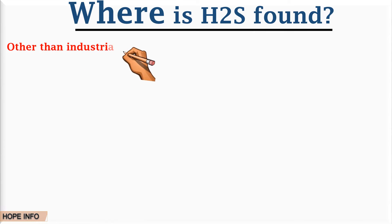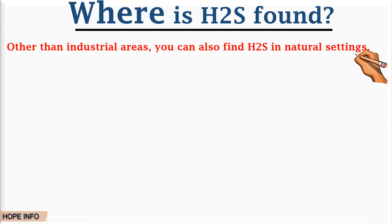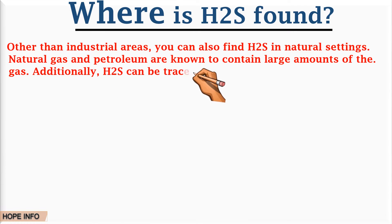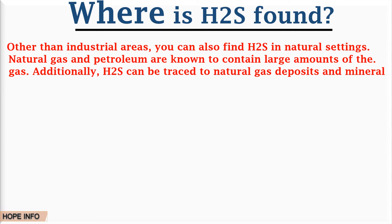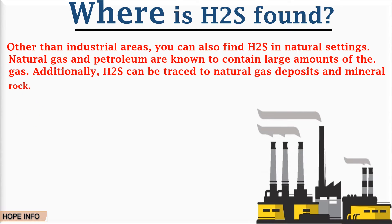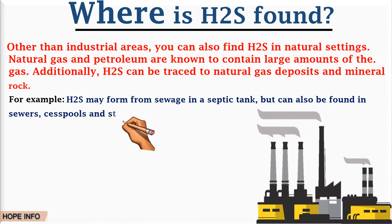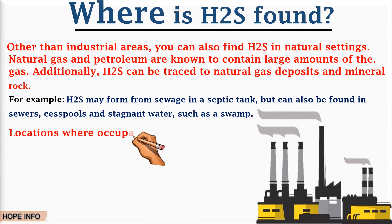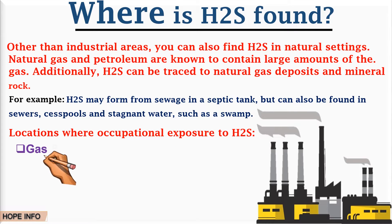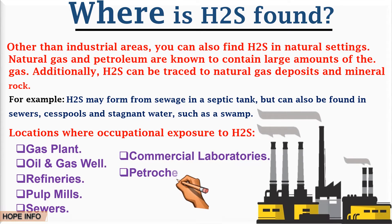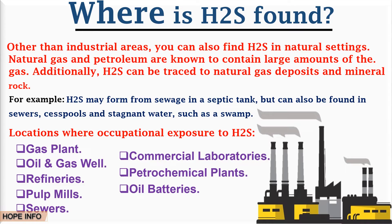Where is H2S found? Other than industrial areas, H2S can also be found in natural settings. Natural gas and petroleum are known to contain large amounts of the gas. Additionally, H2S can be traced to natural gas deposits and mineral rock. It is also formed due to organic material decomposing without oxygen — for example, H2S may form from sewage in a septic tank, but can also be found in sewers, cesspools, and stagnant water such as swamps. Industrial locations where occupational exposure to H2S may occur include gas plants, oil and gas wells, refineries, paper mills, sewers, commercial laboratories, petrochemical plants, and oil batteries.